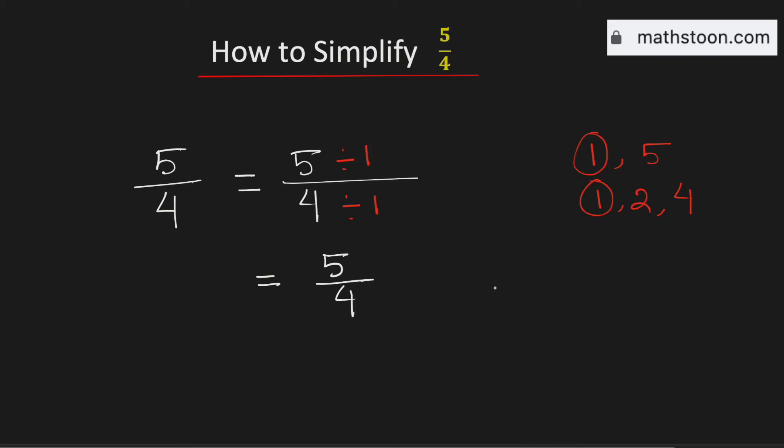Now to write it as a mixed number we will divide the number 5 by 4. We know that 4 goes into 5 by 1 times and if we subtract we will get 1.